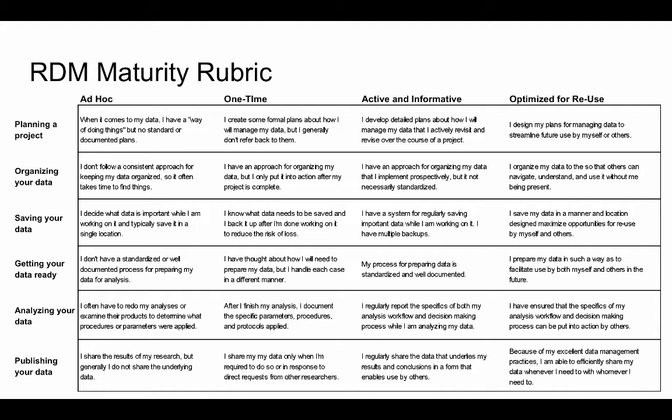We have declarative statements at every level that put what we're talking about in a researcher's own terminology as much as possible, getting away from jargon. These are active sentences like 'I decide what data is important to me while I am working on it and typically save it in a single location.' This allows a researcher to self-assess very quickly and easily. We work under the assumption that not every researcher necessarily wants to be optimized for reuse — if they find they're all doing one-time things and that's okay for their current need, that's part of the communication rather than a grading.